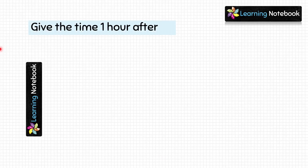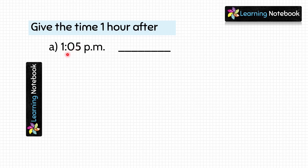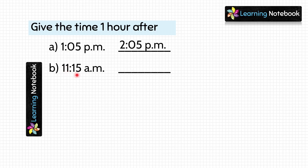Now let's move to our last question: give the time 1 hour after the given time. First, 1.05 PM — 1 hour after this time will be 2.05 PM. Next, 11.15 AM — 1 hour after 11.15 will be 12.15. But this 12.15 now denotes time after noon. So it will be PM, 12.15 PM.